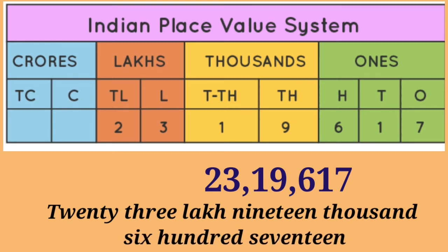This is how to write a number according to Indian system of numeration. When we talk about Indian system of numeration, we have to put comma first for three digits and after that for every two digits we have to put commas.